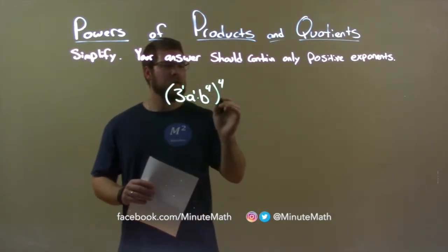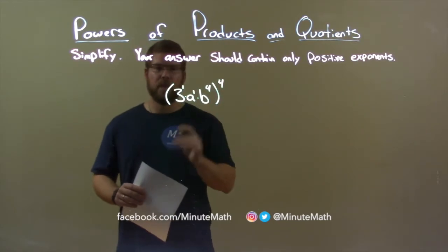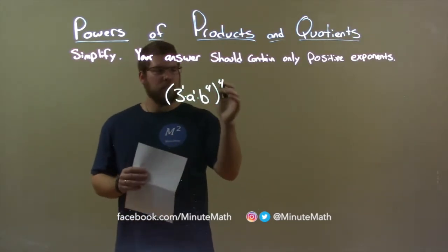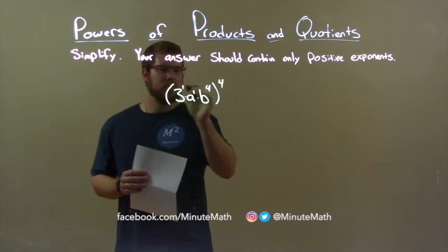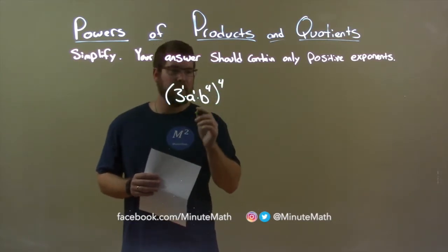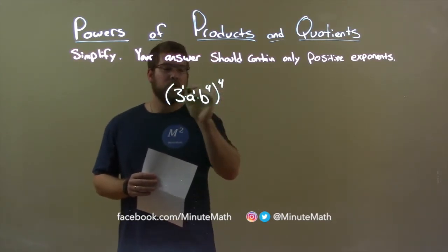When we raise everything here in the parenthesis to the 4th power, to simplify this, we distribute this exponent to all the exponents on the inside, and that 4 gets multiplied to each one, each of the exponents.